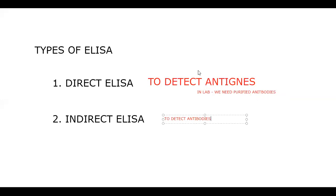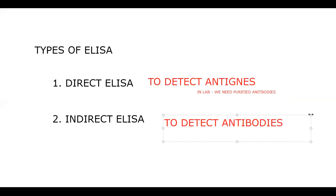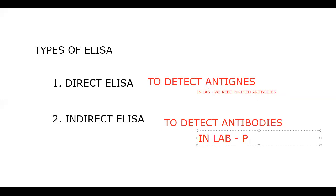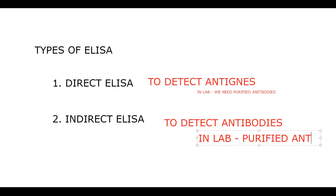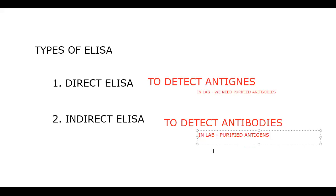When detecting antibodies in the patient, what is required in the laboratory is purified antigens. What you are searching for in the patient is important: to detect antigens, you carry antibodies in the lab; to detect antibodies, you carry purified antigens in the lab. That distinction — what is from the laboratory versus what is from the patient — is very important.